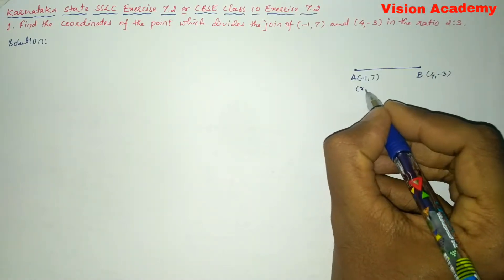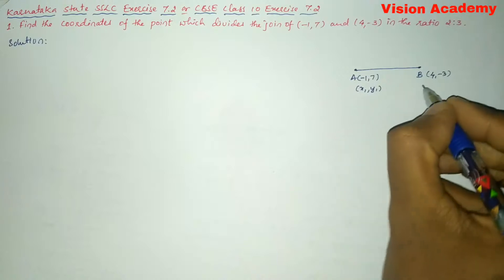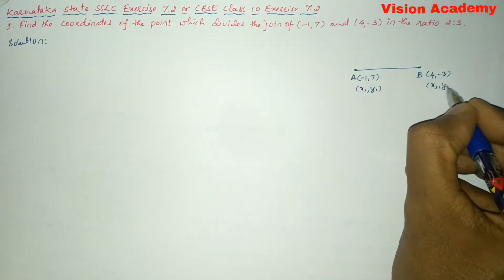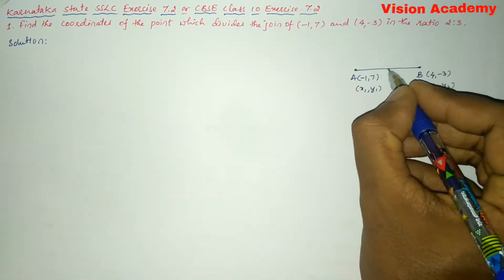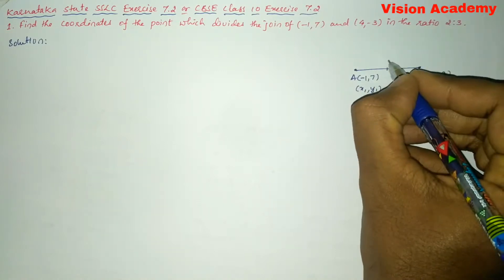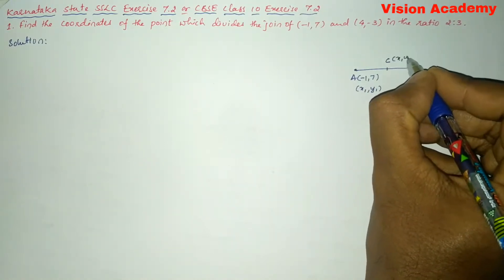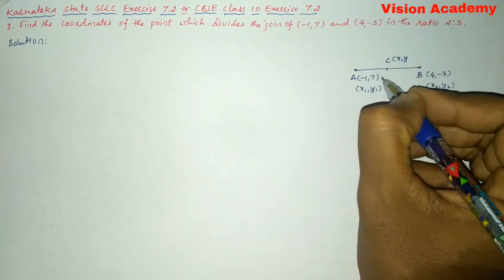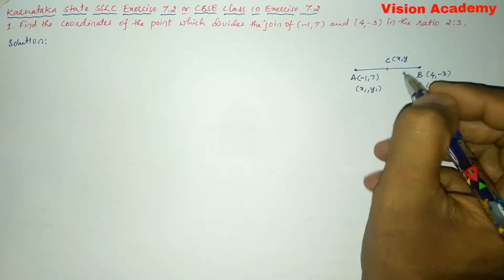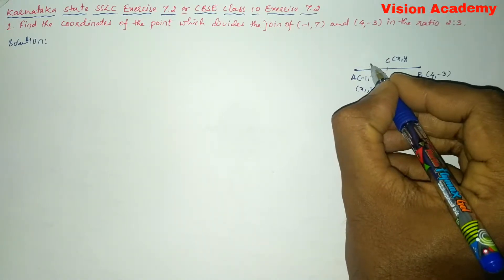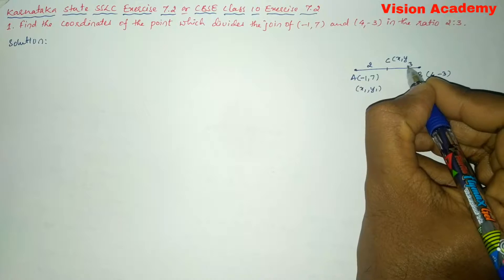So, here this is X1, Y1 and this is X2, Y2. Let us take one point that is C whose coordinates are (X, Y), and this C divides AB in the ratio 2:3.